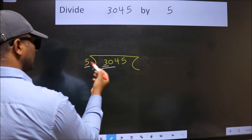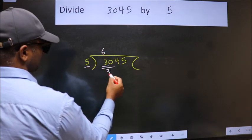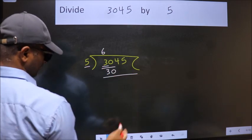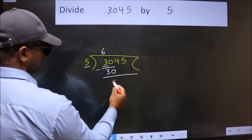When do we get 30? In 5 table. 5, 6, 30. Now we should subtract. We get 0.